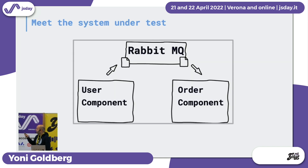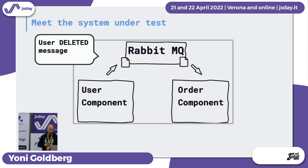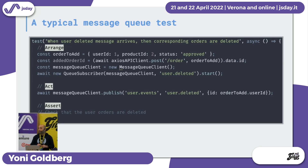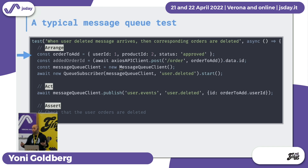Let's start with the solution. The system under test looks like this: we have a user component — a microservice — that fires a 'user deleted' message into some kind of message queue, which propagates to an order microservice. The order microservice needs to know the user was deleted because it needs to delete or modify all of their orders. So how would a typical test look for the order microservice?